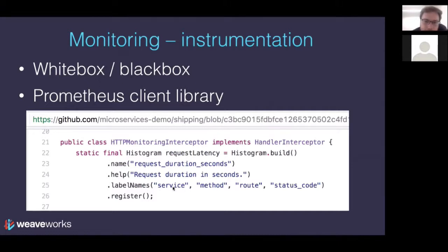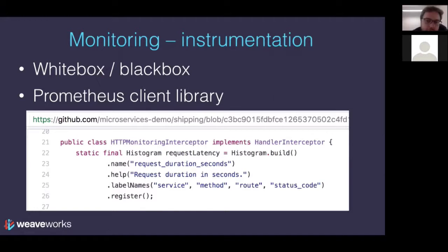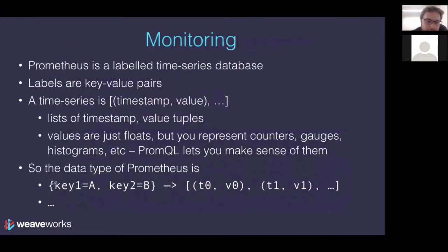In this shipping example from the GitHub URL shown, you specify the service label as the shipping service. You might also have a user service and a billing service. This is very powerful because you can ask Prometheus for request durations across all your services and see them all in a graph, then narrow down by adding extra specificity to your PromQL query. That's why people call Prometheus a multidimensional monitoring system — each key is a dimension, and you can have as many dimensions as you like.